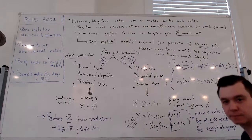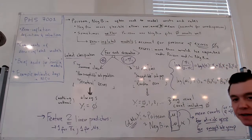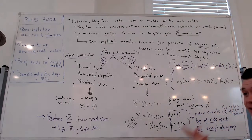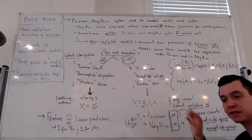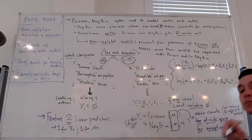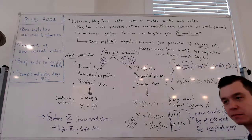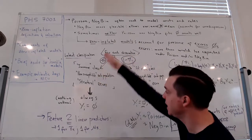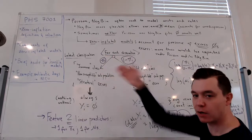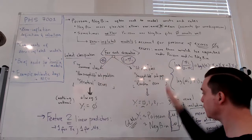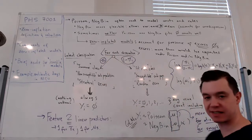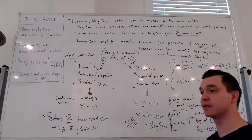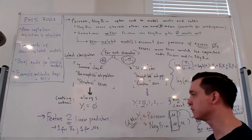You can use a completely different set of explanatory variables for the logit process and for the log-mean process. In practice, people usually use the same variables because it's hard to imagine what would affect the probability of being in the immune class but not affect your mean count in the at-risk group. But you don't have to — you can pick different explanatory variables if you're testing some kind of interesting hypothesis.